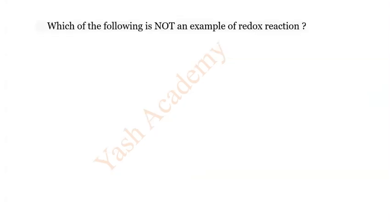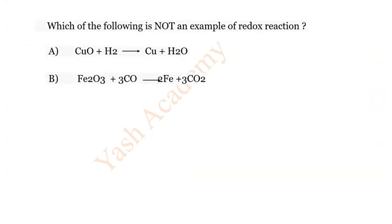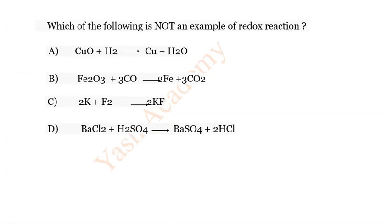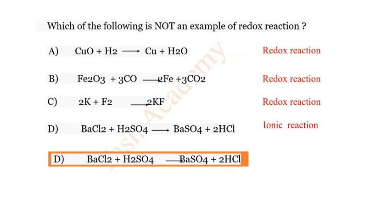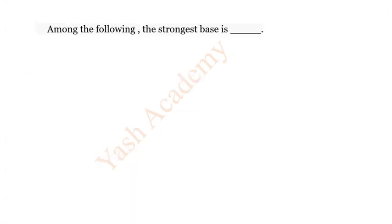Question 12: Which of the following is not an example of a redox reaction? The first reaction A is a redox reaction, B is a redox reaction, C is also a redox reaction, but D is an ionic reaction, so it is not a redox reaction. The correct answer is D.